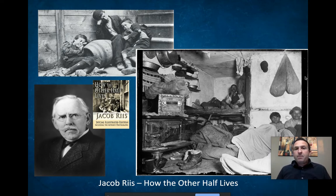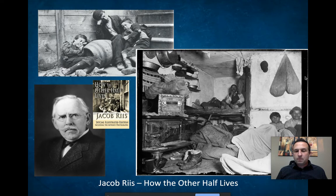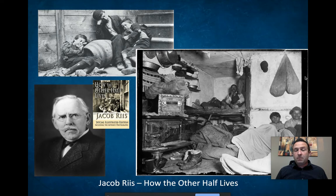He goes into the Lower East Side — there are no electric lights there, no sanitation. You can see some of the pictures on screen. He captures people in everyday living. Look at the picture on the bottom right — how many people do you see living in a tiny, cramped room? This is not how humans should live. What made Jacob Riis so important was he didn't just report it with words. He pioneered the use of flash photography in low light, revolutionizing photography, and was able to depict this poverty as it really was.